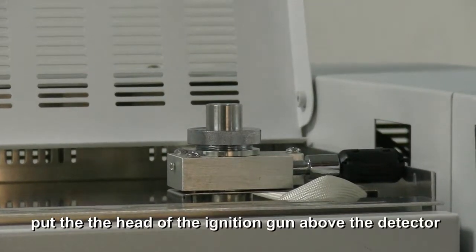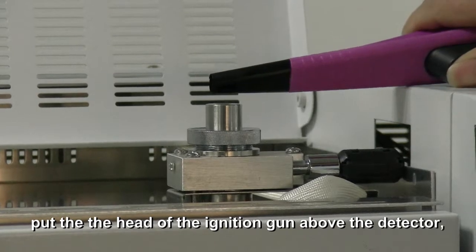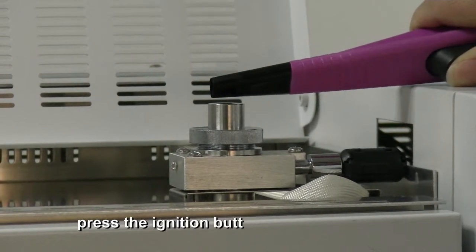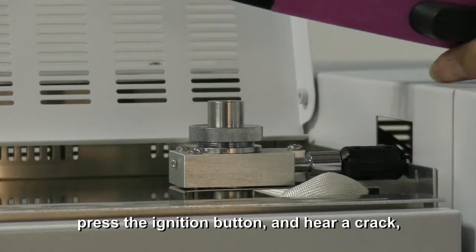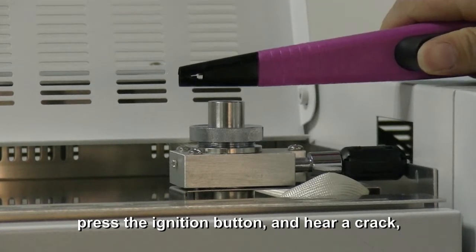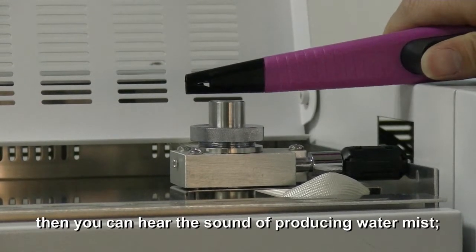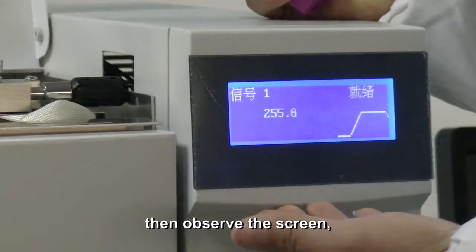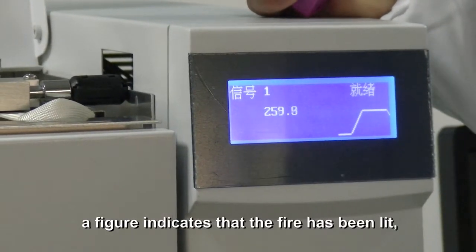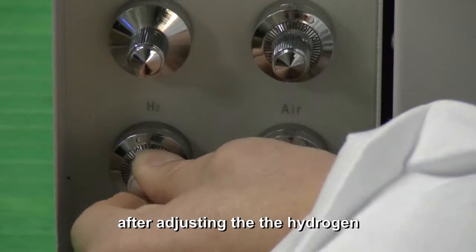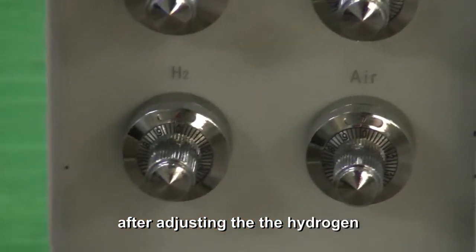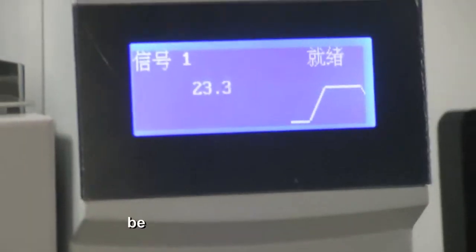Put the head of the ignition gun above the detector, press the ignition button, and hear a crack. Then you can hear the sound of producing water mist. Observe the screen—a figure indicates the fire has been lit. After adjusting the hydrogen flow to required testing condition, the screen figures become significantly smaller.